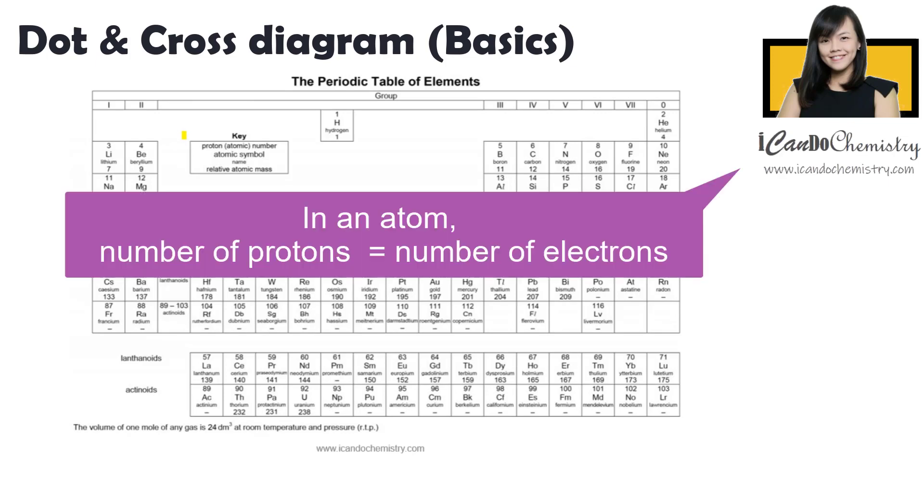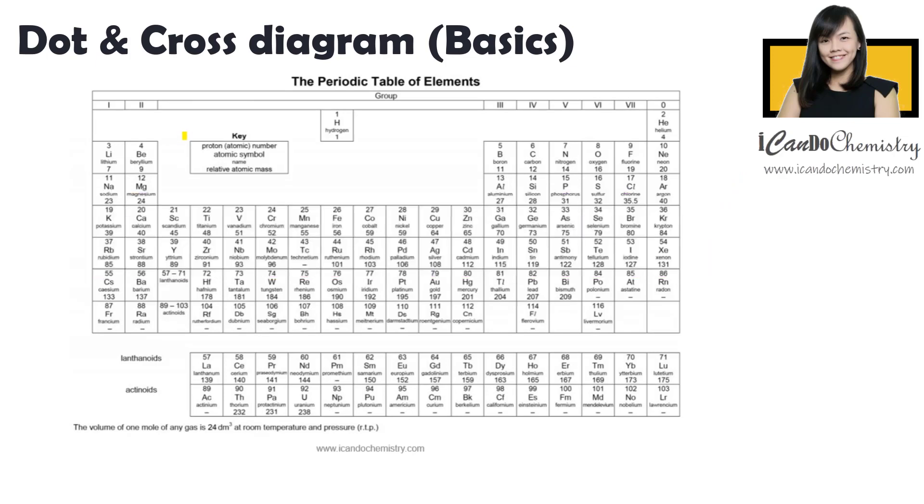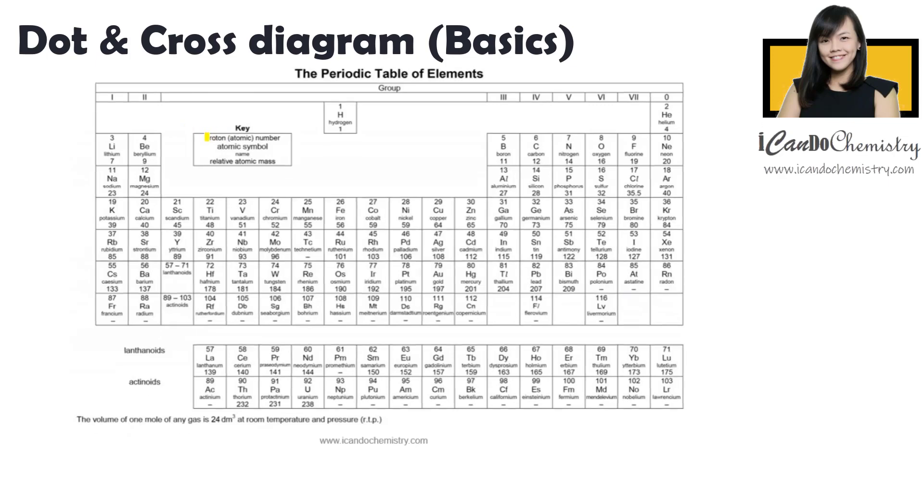Now back to the atomic structure, we know that in an atom, the number of protons and electrons must be the same. In the periodic table that you have in the exam, you can refer to the key to know what each number represents. So the top number is the proton number, or atomic number, which means it is the number of protons. In an atom, number of protons and number of electrons are the same, and hence the number at the top also represents the number of electrons in an atom.